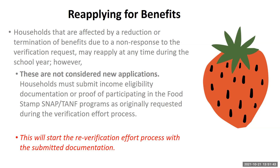Households affected by a reduction or termination of benefits due to non-response to the verification request may reapply at any time during the school year. However, these are not considered new applications. Households must submit income eligibility documentation or proof of participating in SNAP or TANF programs as originally requested during the verification effort process. If a household that was selected for verification submits a new application, it will be subject to the verification process and documentation will be required.